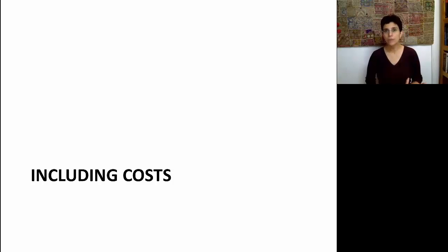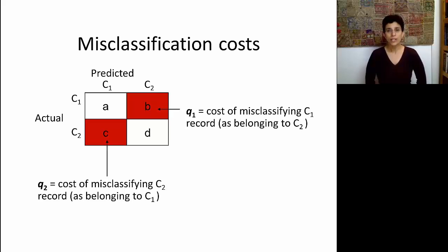We talked about one class being more important than the other. Let's also include the notion of costs, because in some cases we can actually evaluate what is the cost of misclassifying a record in this direction or in the other direction. So, similar to the confusion matrix, we can build a cost matrix. And in this little matrix, where I have rows for the actuals and columns for the predicted, I'm using the color red to denote the errors. A, B, C, and D are the number of records in each one of these cells. Now I'm attaching a cost of Q1 to each record in the cell that has B records. In other words, Q1 is the cost of misclassifying a C1 as a C2. And similarly, I'm going to define the cost Q2 to be associated with misclassifying a C2 as a C1.